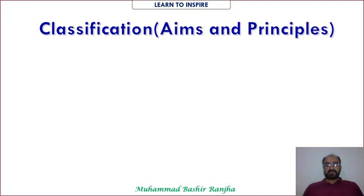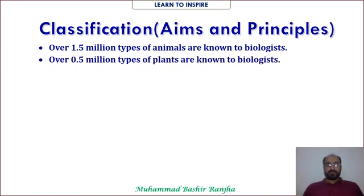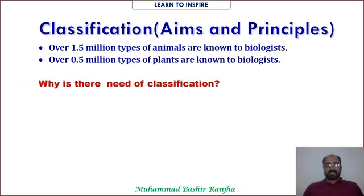Our first topic is classification, its aims and principles. Before that, some information: about 1.5 million types of animals and about 0.5 million types of plants known to biologists have been discovered. These organisms have been catalogued and need to be studied and classified systematically.